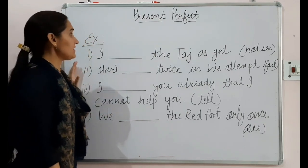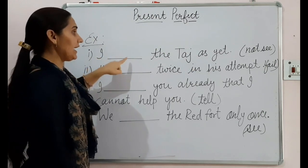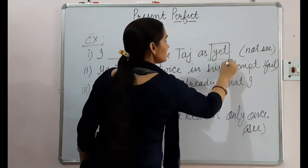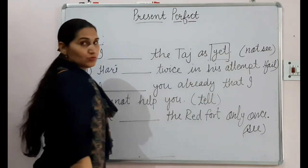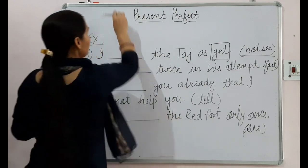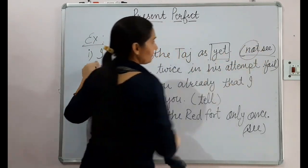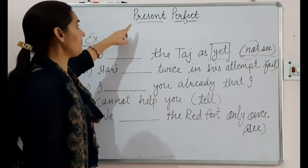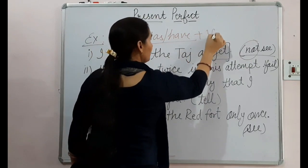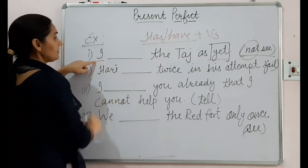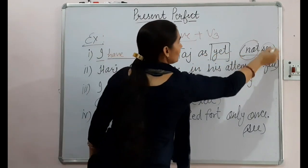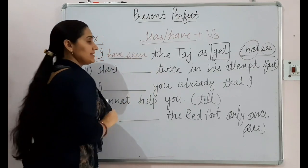Let's look at some examples. First: 'I have not seen the Taj Mahal as yet.' The word 'yet' is a signal word for present perfect. The subject is 'I', so we use 'have'. The third form of 'see' is 'seen'. Since the sentence is negative, we use 'have not seen'. Answer: 'I have not seen the Taj Mahal as yet.'